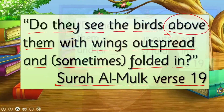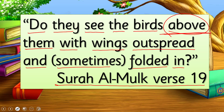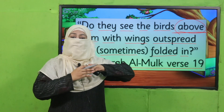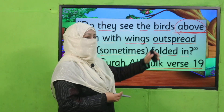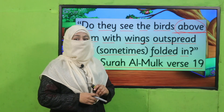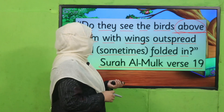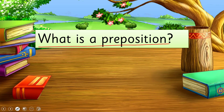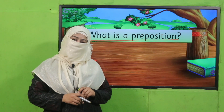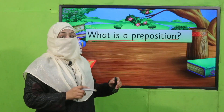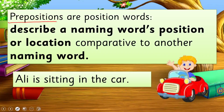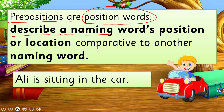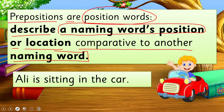Now, notice this word 'above' — this word is telling us the position of birds. We are standing here and the birds fly above us in the sky. Such types of words are known as position words, and in grammar we call them prepositions. So what is a preposition? Prepositions are position words — they describe a naming word's position or location relative to another naming word. For example: 'Ali is sitting in the car.' Ali and car are both naming words, and 'in' tells us the position of Ali relative to the car.